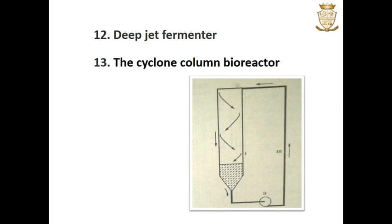In the cyclone column bioreactor, the culture fluid is pumped from the bottom to the top of the fermenter, from where it descends down through the walls of the column in a relatively thin film. This is especially used for the cultivation of filamentous microorganisms. Nutrients and air are fed through the base of the column while exhaust gases leave from the top.